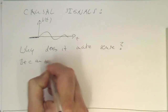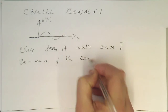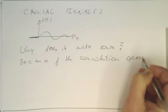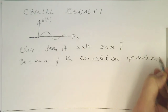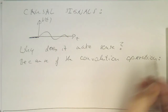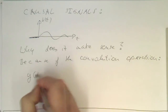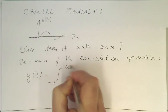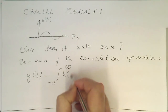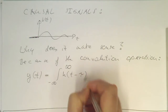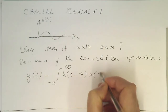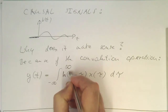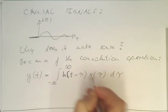Because of the convolution operation: remember, the convolution operation is defined like this — we are running an integral from minus infinity to plus infinity, which is very dangerous in causal systems. And h of t minus tau, for example, and then x of tau d tau. So we need to look into the convolution and why this is important in our case.